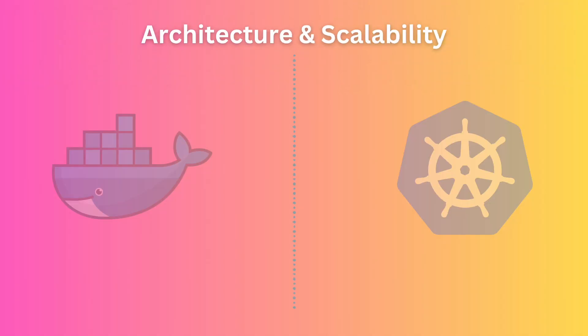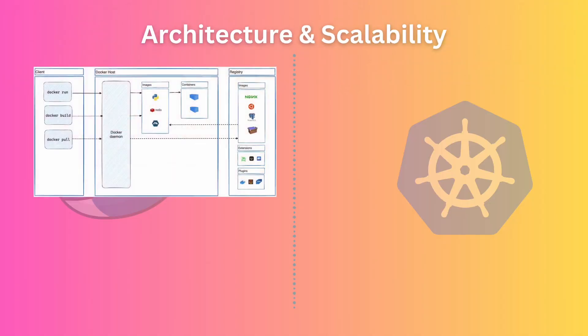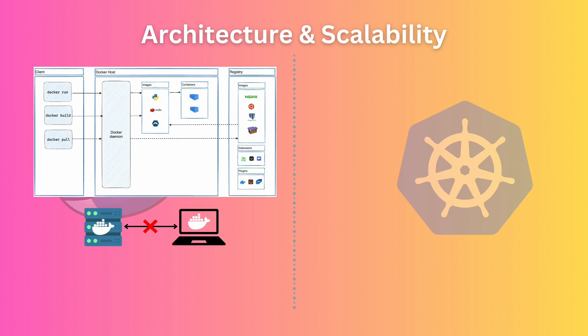Docker has a client-server architecture. The server, also known as the daemon, must be running on all servers where you want to perform Docker operations. But a daemon manages its own host machine only. Multiple daemons running on their respective host machines cannot coordinate with each other — they need an orchestrator for that. This means if you run an application using just Docker, you can only scale out vertically. You're limited by the capacity of that one host your app is running on.